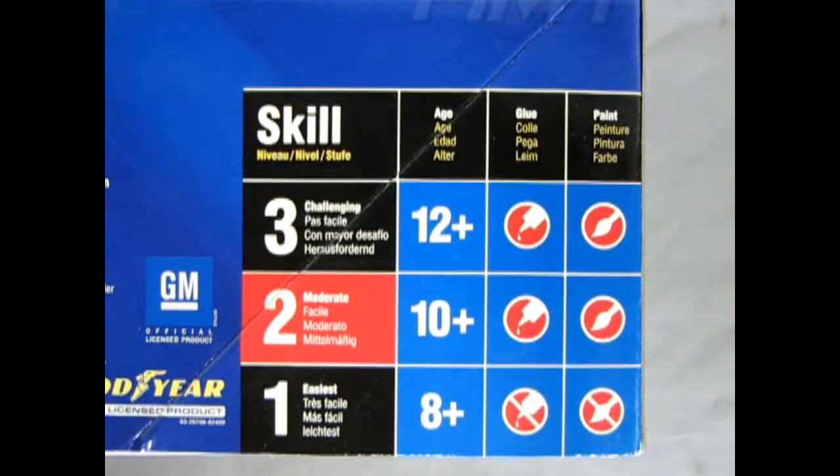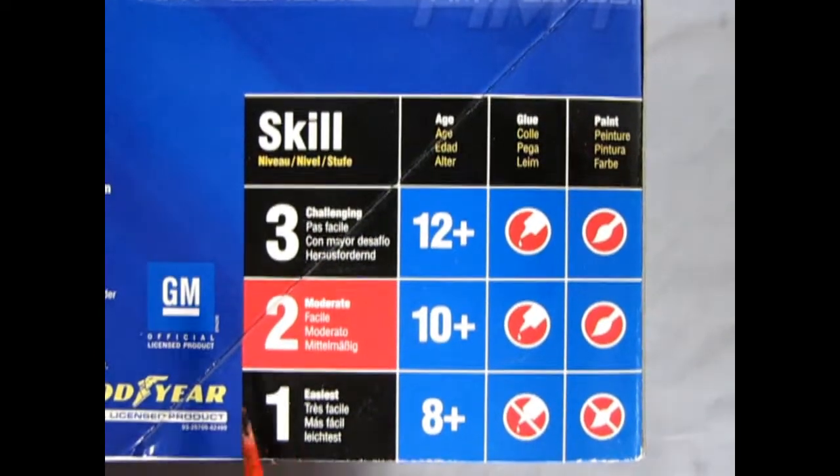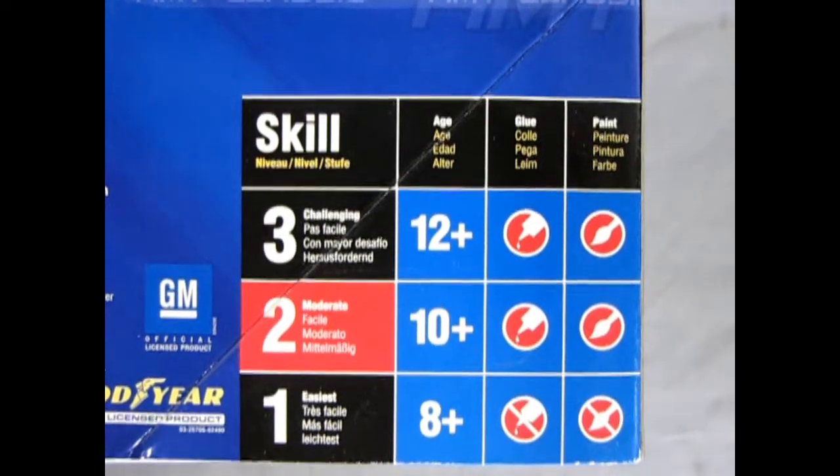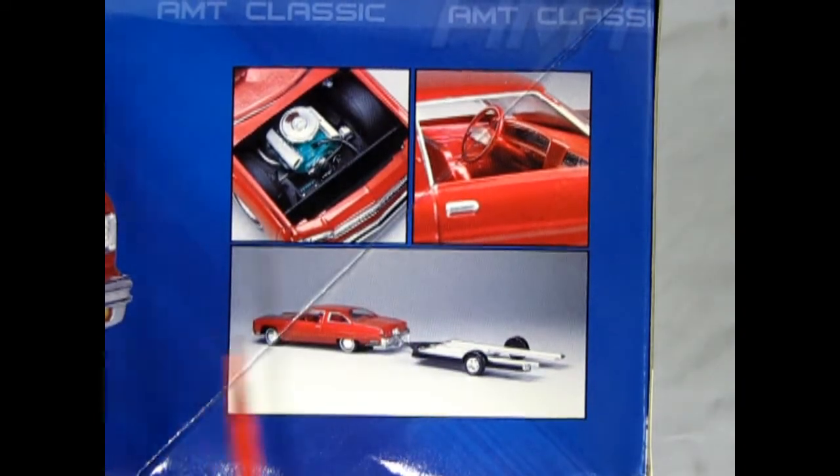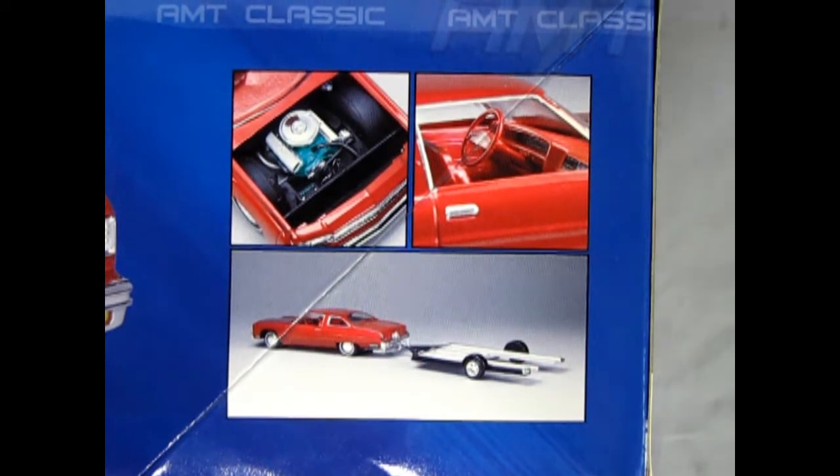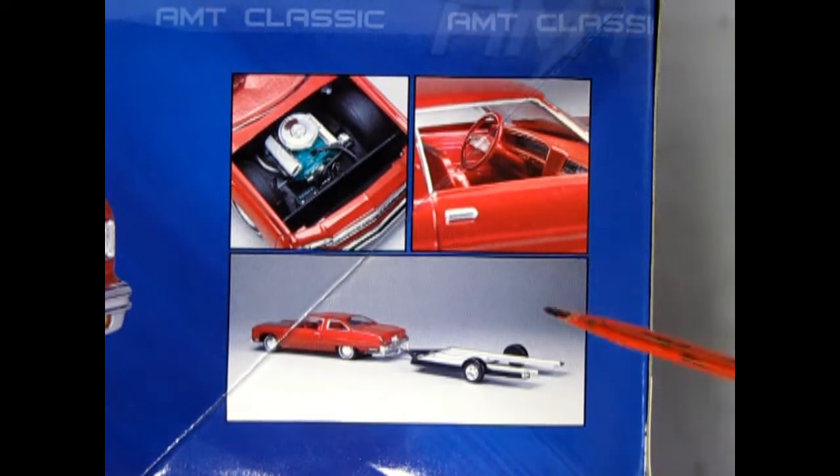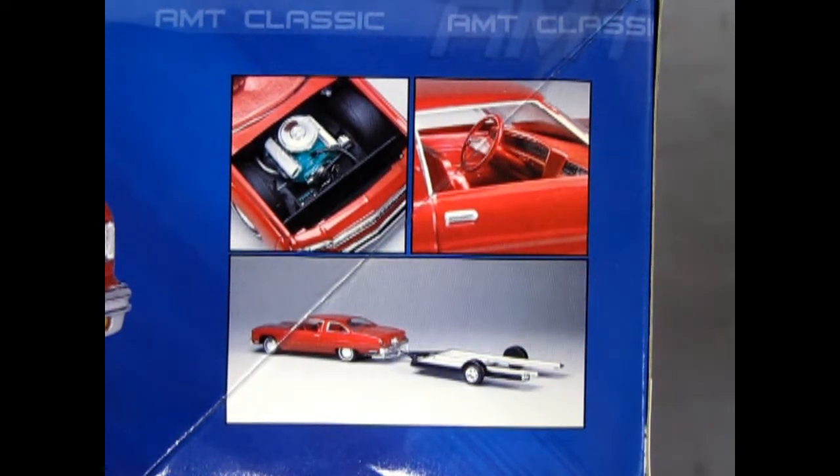This Impala is a skill level 2 kit, which of course is for the moderate model builder. Ages 10 and up, requires glue and paint. And on this side of the box you can see how the model builder at AMT built the kit with of course our Chevy 350 under there. The nice interior and this kit also includes a boat trailer.